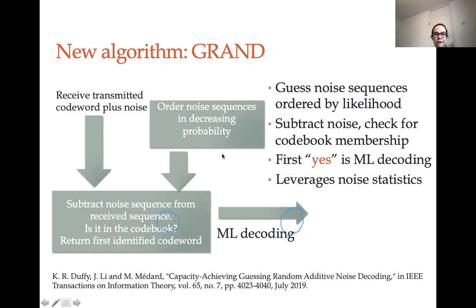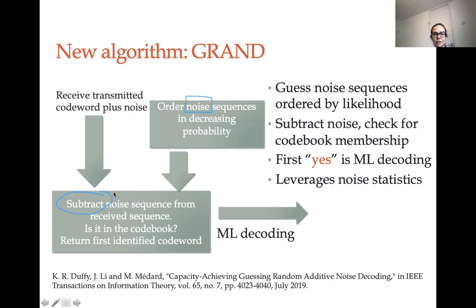So our new GRAND algorithm is: receive transmitted codeword plus noise; order noise sequences from highest to lowest probability; subtract the noise sequence; if it's in the codebook, return the first identified codeword — the first yes is my ML decoding. I can leverage the noise statistics however I want, including using correlation in the noise. Going back to the example with the eight-bit string where the last bit was flipped: I first guess all zeros noise — the most likely noise for a BSC. If that doesn't result in a codeword, I try a one at the end. In this case, that is indeed a codeword — the one that was transmitted — so that's my maximum likelihood decoding and we're done.